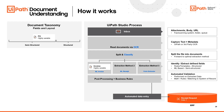Normally, the UiPath Studio process defines what the robot will be doing. But in this case, because it's machine learning, we have a hosted skill — we call it an ML skill. We actually send that invoice over to the ML skill, run it through our machine learning model for invoices, and extract the data. This happens, for the most part, externally from the UiPath Studio process.